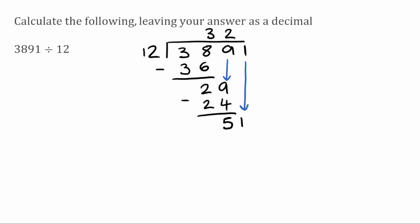We bring down the final digit, which is 1, giving us 51. How many times does 12 fit into 51? That'll be 4, because 4 times 12 is 48. 51 take away 48 leaves 3. We've reached the end of the number with a remainder, so we put a decimal place at the end of 3891 and after 324 in our answer, extend the line, and add some zeros.